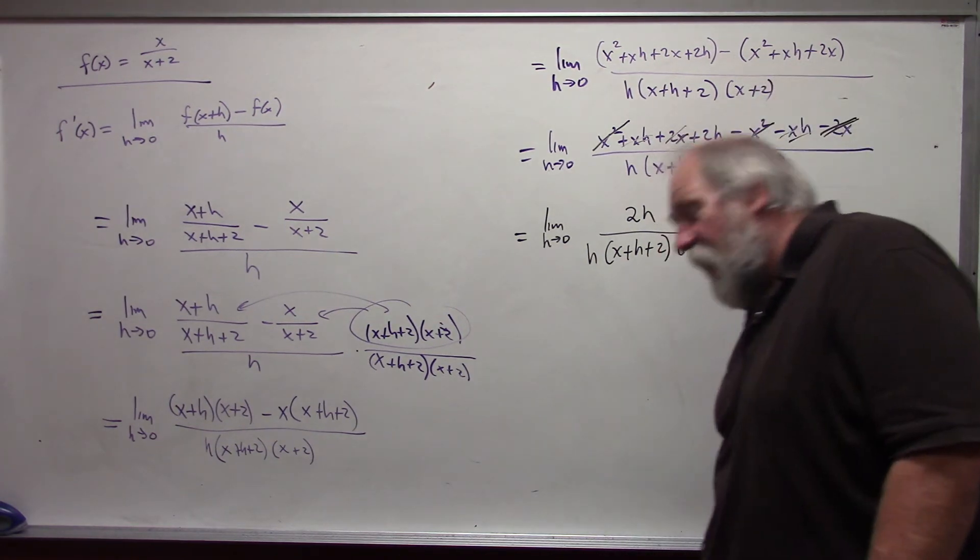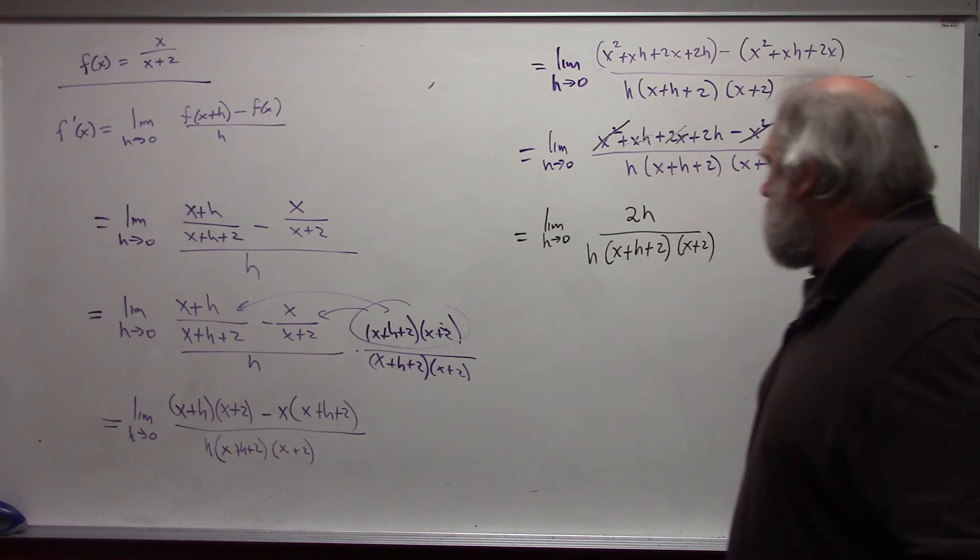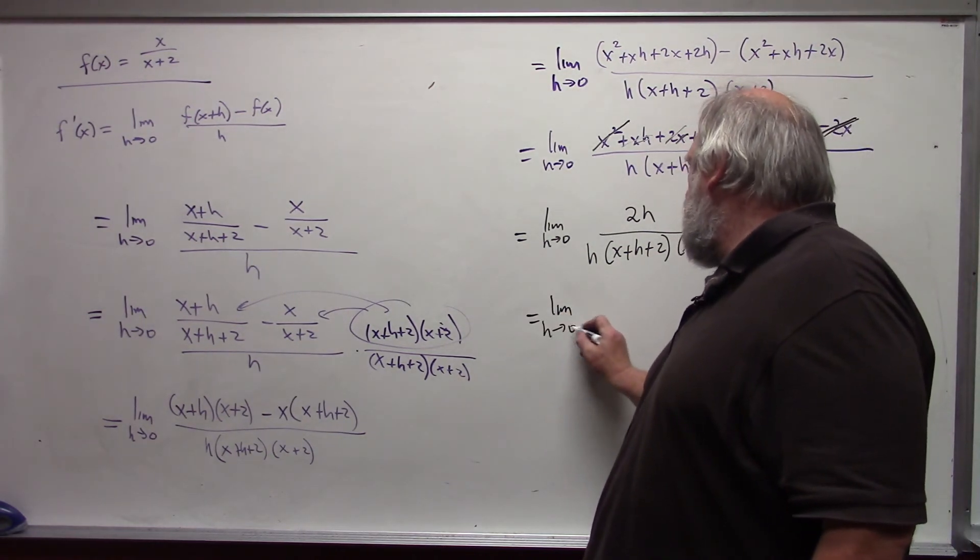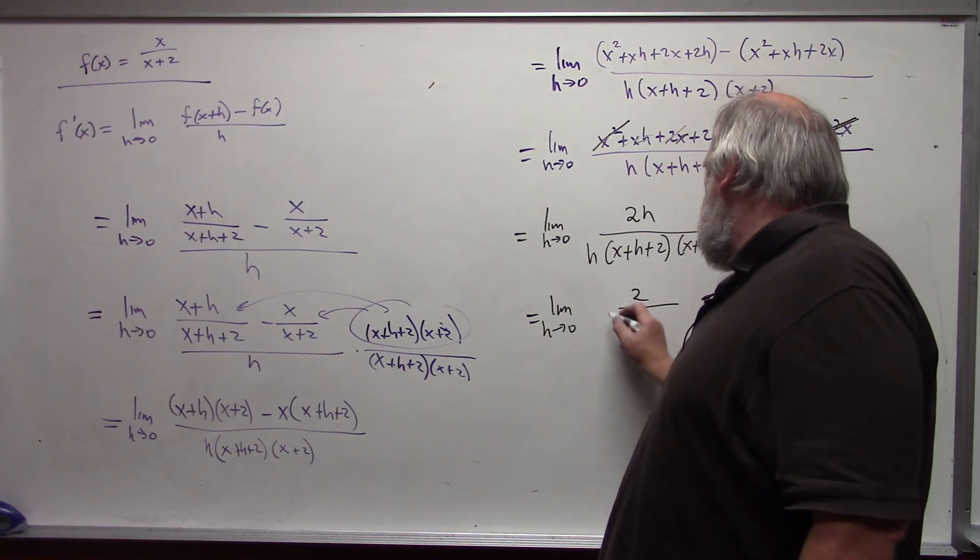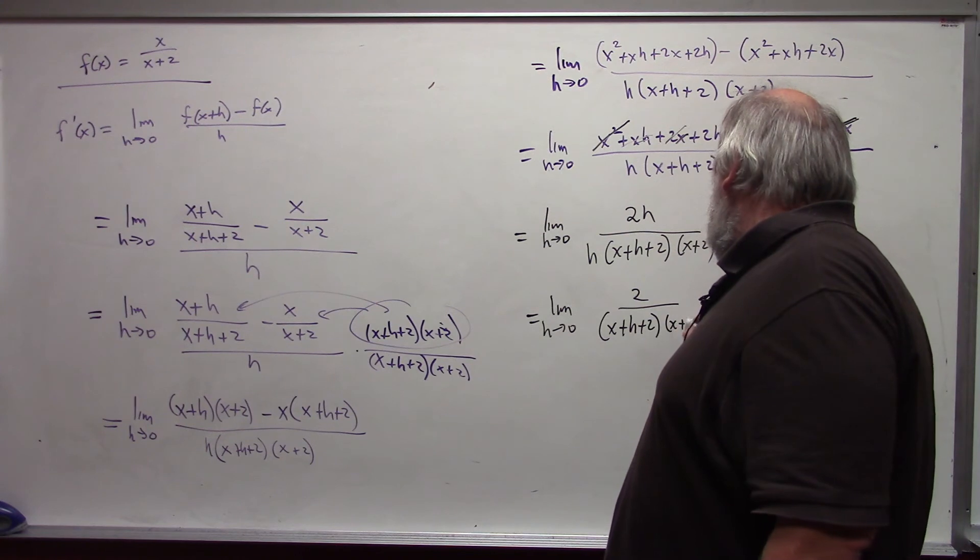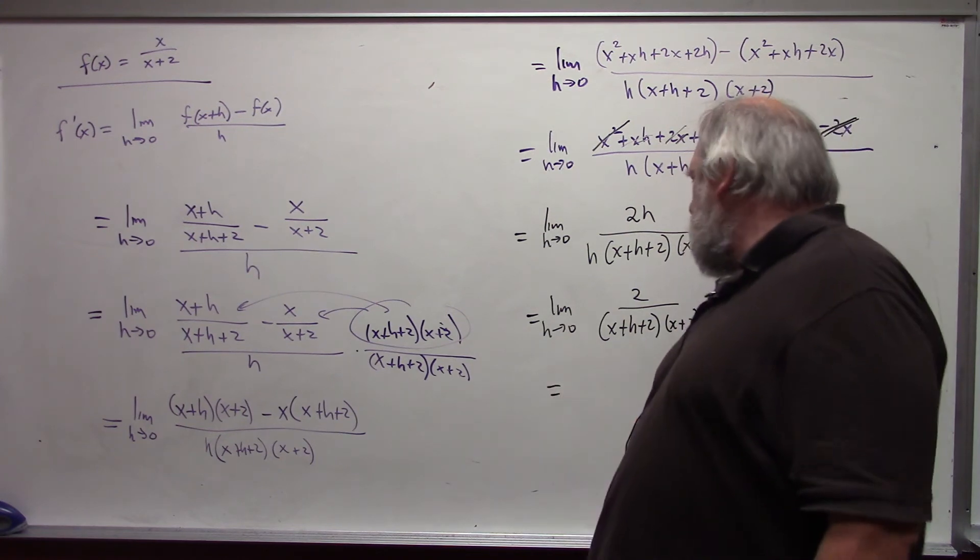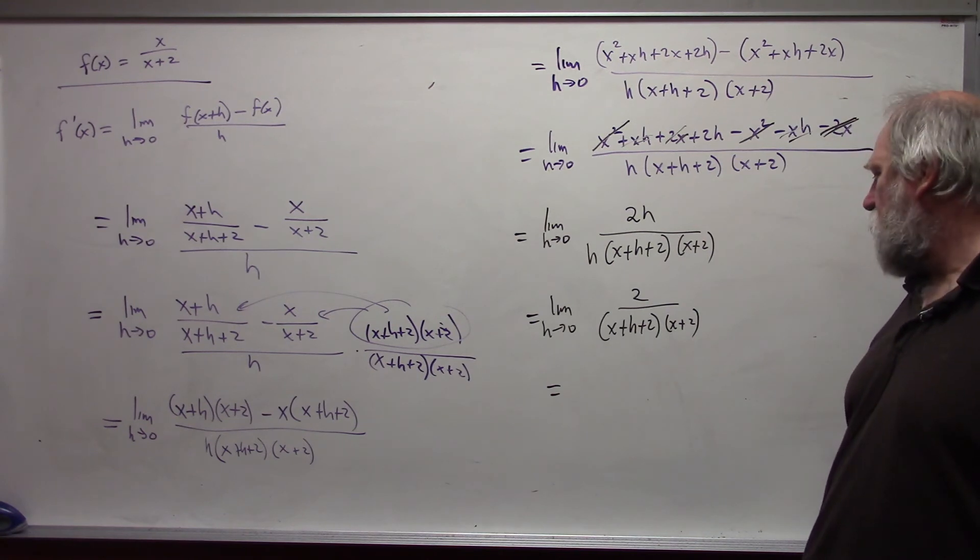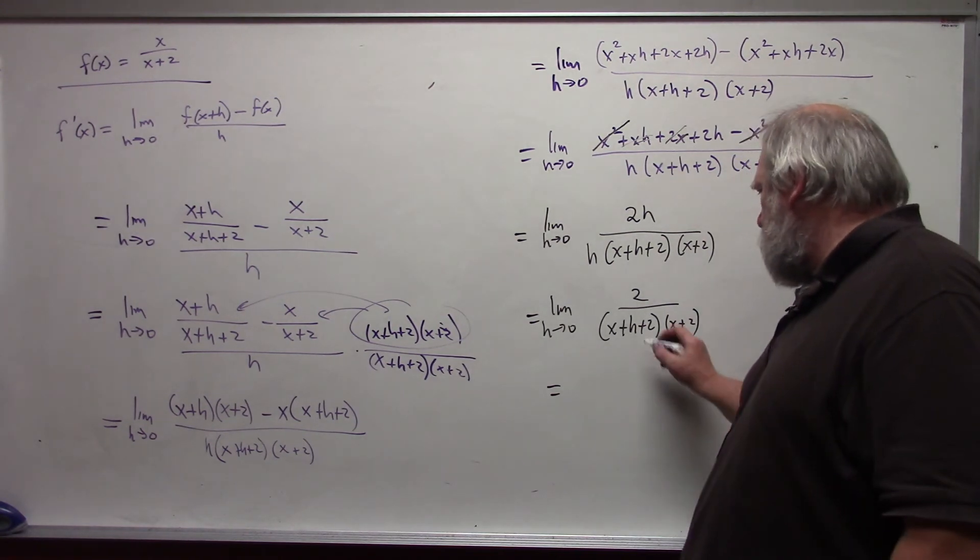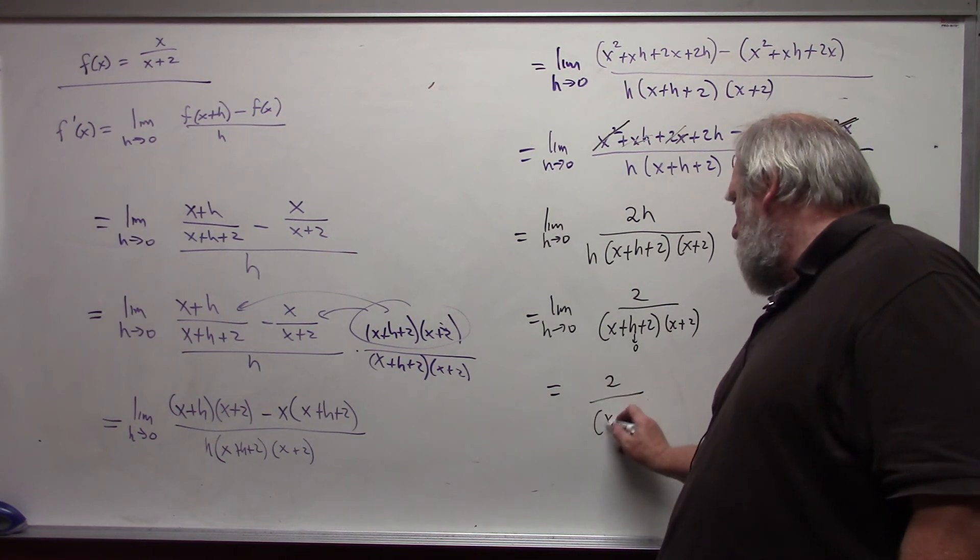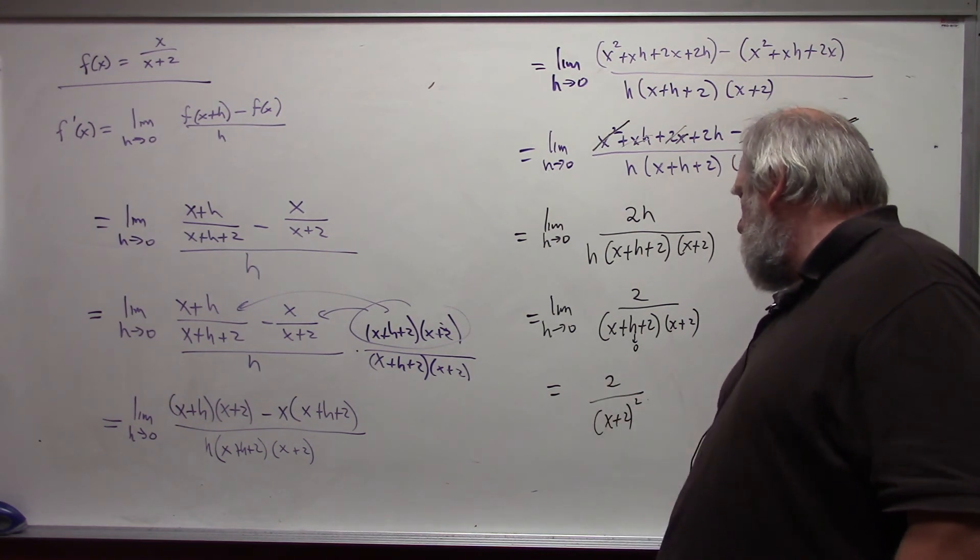Which means now, I can reduce and get rid of the problem child of h, and I am left with 2 over x plus h plus 2 times x plus 2. At this point, it is no longer indeterminate. We can actually let h approach 0. And so, in this case, I am left with 2 over x plus 2 quantity squared.